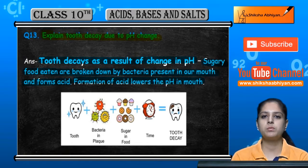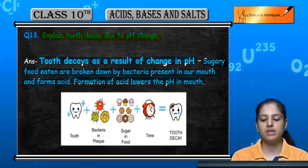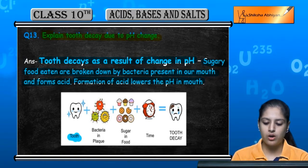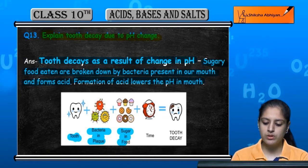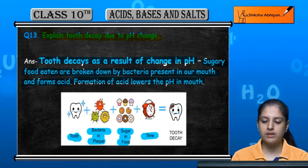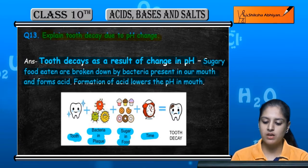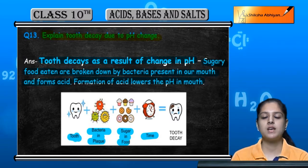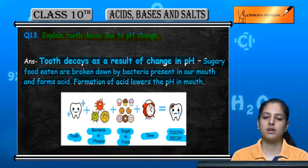So the pH will decrease, which leads to tooth decay. For example, if we eat more sugary food, bacteria break it down over a long time, more acid accumulates, and with time tooth decay occurs.